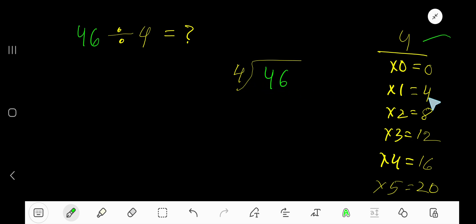4 goes into this 4. 4 goes into 4 one time. 1 times 4 is 4. Subtract, 0. Bring down this 6.